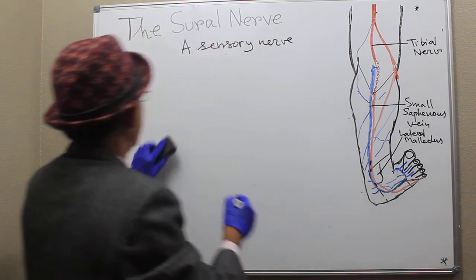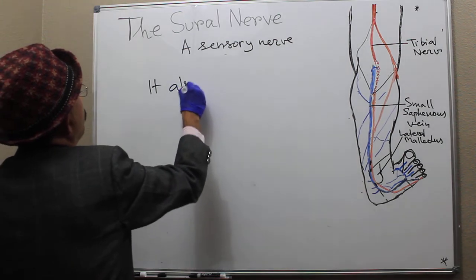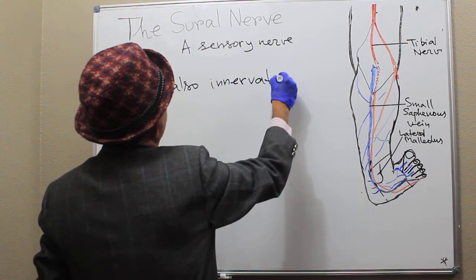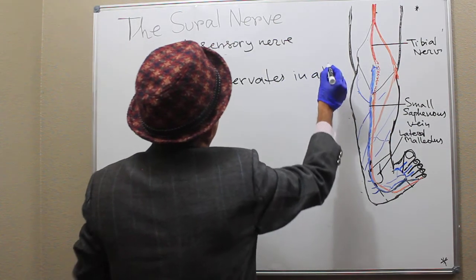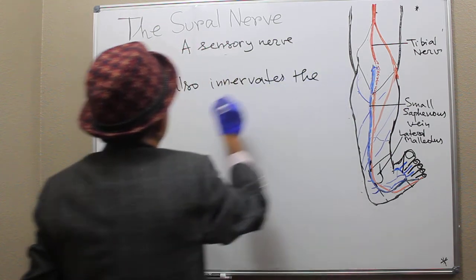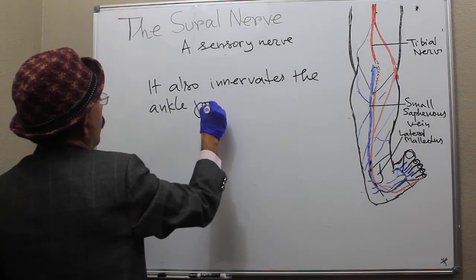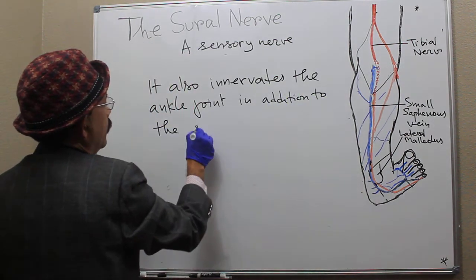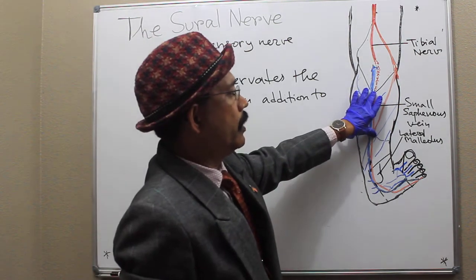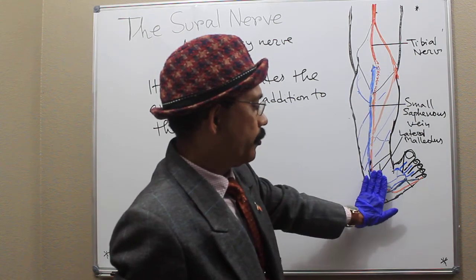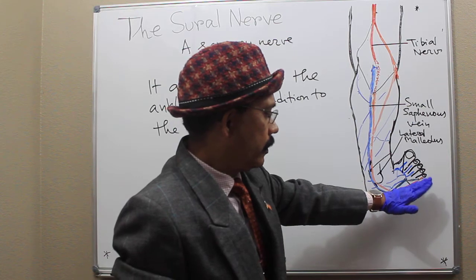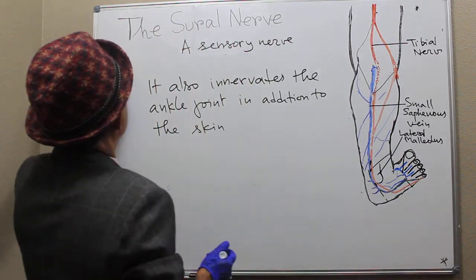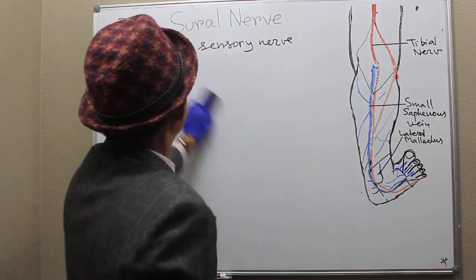In addition to the skin, the sural nerve also innervates the ankle joint. So in summary, it innervates the lower half of the back of the leg, the lateral aspect of the ankle joint, the lateral part of the dorsum of the foot, and the lateral margin of the foot up to the little toe.